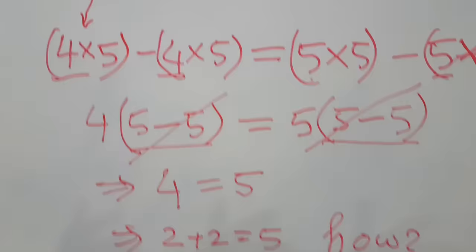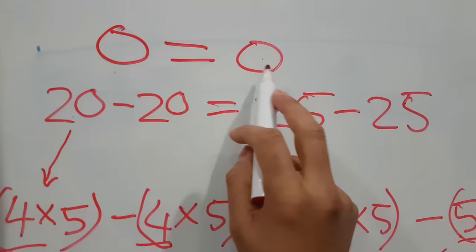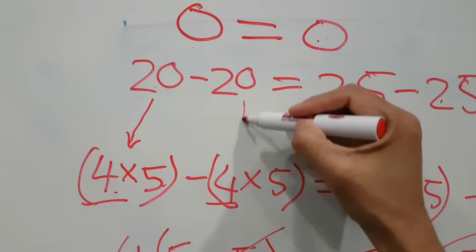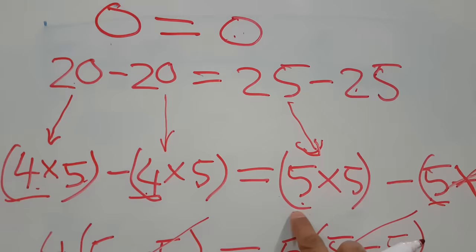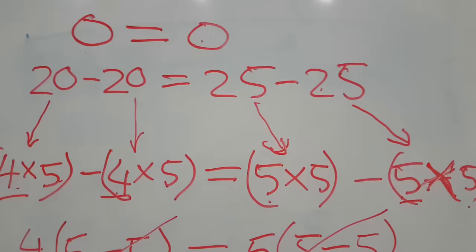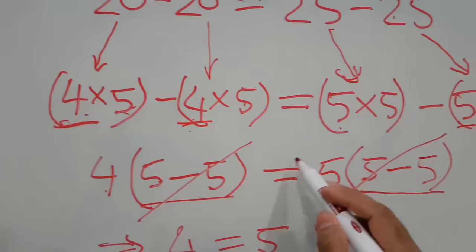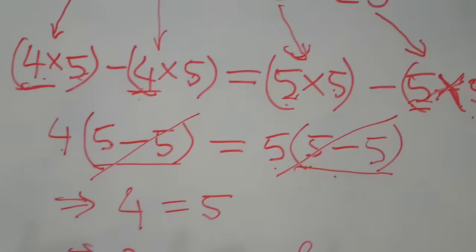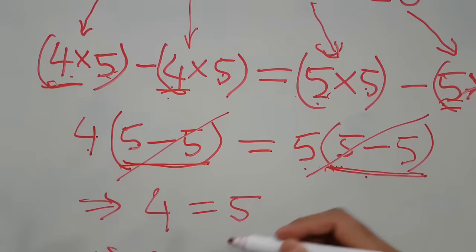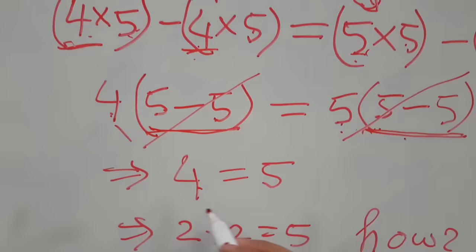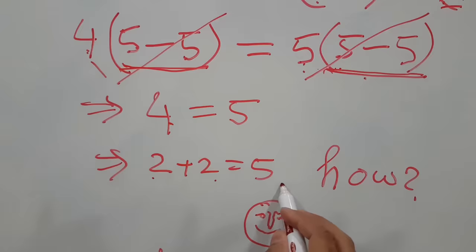I am repeating again: 0 equals 0. Zero can be expanded as 20 minus 20, and also as 25 minus 25. Then 20 expands to 4 times 5, and the next 20 also expands to 4 times 5. Similarly, 25 expands to 5 times 5, and the next 25 also expands to 5 times 5. Taking 4 as common on the left gives 4 times (5 minus 5), and taking 5 as common on the right gives 5 times (5 minus 5). Since (5 minus 5) appears on both sides, eliminating them leaves 4 on the left and 5 on the right.